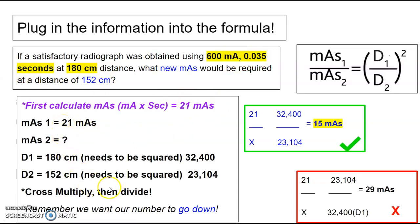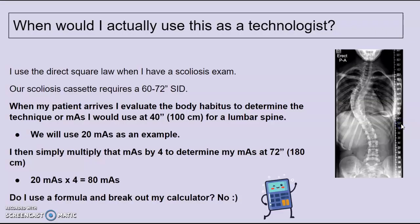Plug in the rest of your factors. Simply cross, multiply, and divide. So if I use 21 mAs at 180 centimeters, I've decreased my distance to 152 centimeters. Should my number go down or should it go up? I'm hoping you said go down. So I got an answer of 15 mAs. If I plugged in my factors, if I plugged in my distances in the wrong spots down here, my number went up. So if it goes up, that's not what I want.